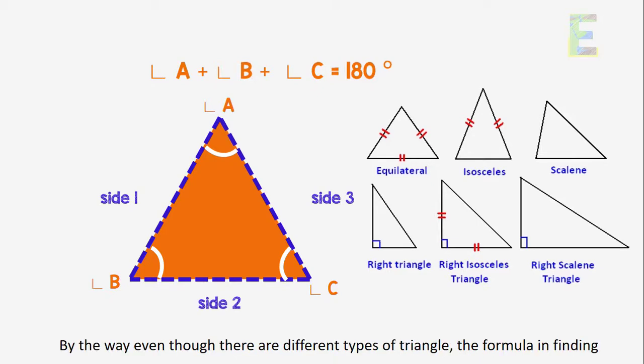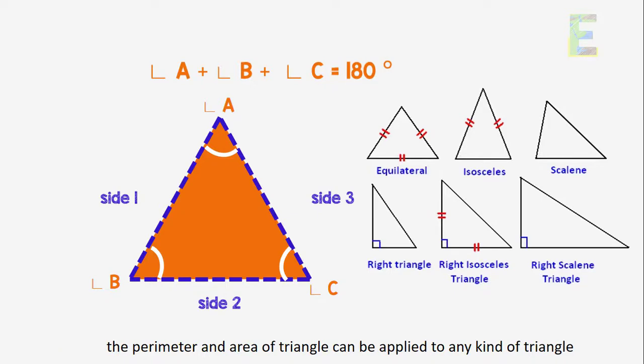By the way, even though there are different types of triangle, the formula in finding the perimeter and area of triangle can be applied to any kind of triangle.